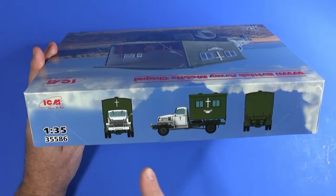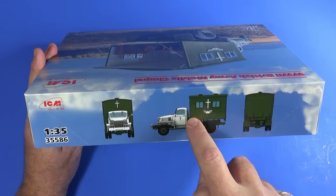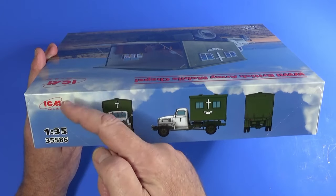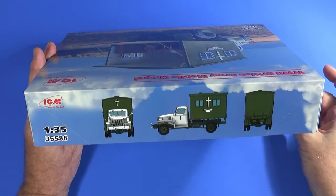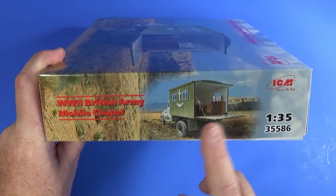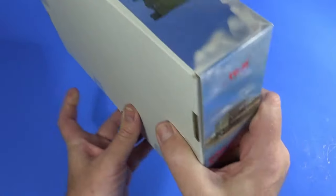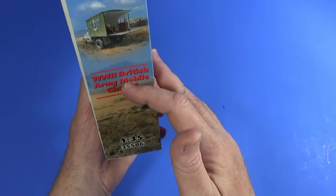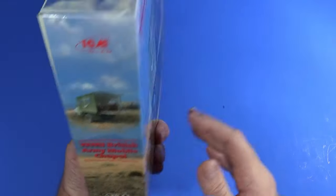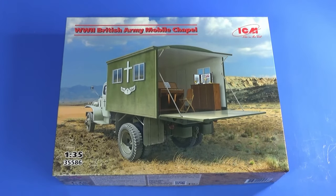On the other long side, we have a three-view of the finished truck with the mobile chapel unit on the back and a reprise of the logo, scale and model number. On the short ends, the same information is arranged vertically for when the boxes are stacked on a shelf, which makes them easier to read without having to bend your head over, which is a nice touch.